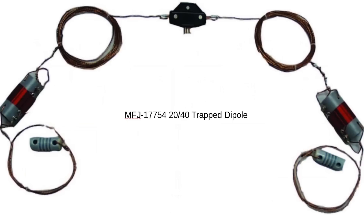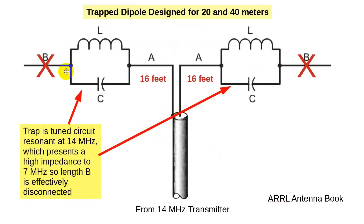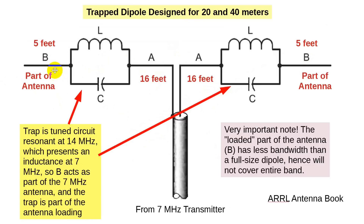I went with the MFJ 2010, which is an off-center-fed dipole and has no traps. We have a tuned circuit, and when using it on the lower band, the end sections become part of the antenna with some loading. The net difference between the inductive reactance and capacitive reactance — remember, when you go down in frequency, the capacitive reactance goes up and the inductive reactance goes down, so the inductive dominates.